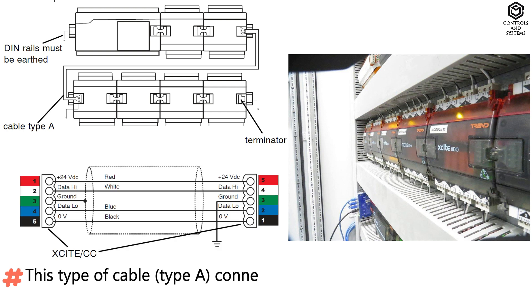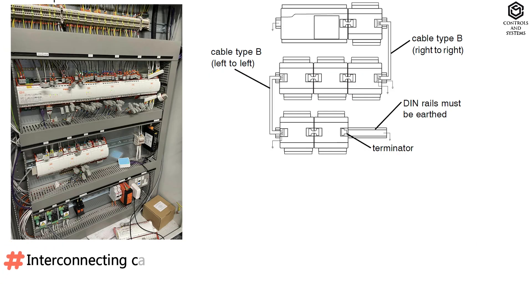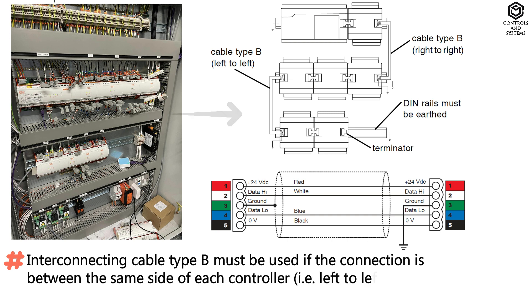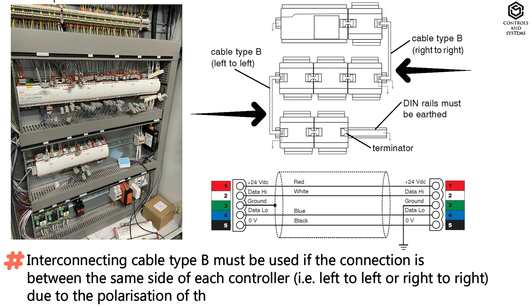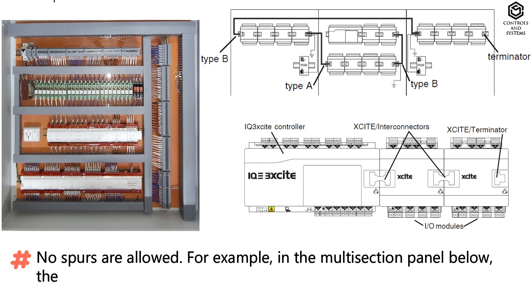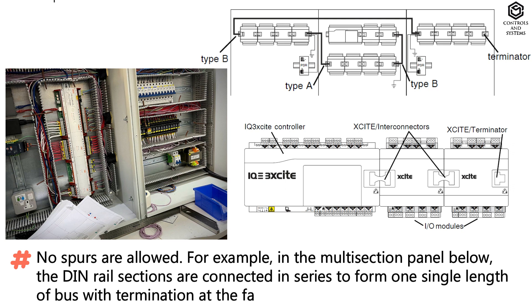The cable core colors shown are for the recommended Belden 3084A cable. Cable type A connects the right-hand side of one module to the left-hand side of another. Interconnecting cable type B must be used if the connection is between the same side of each controller — that is, left-to-left or right-to-right — due to the polarization of the connectors. No spurs are allowed. For example, in a multi-section panel, the DIN rail sections are connected in series to form one single length of bus with termination at the farthest end from the controller.